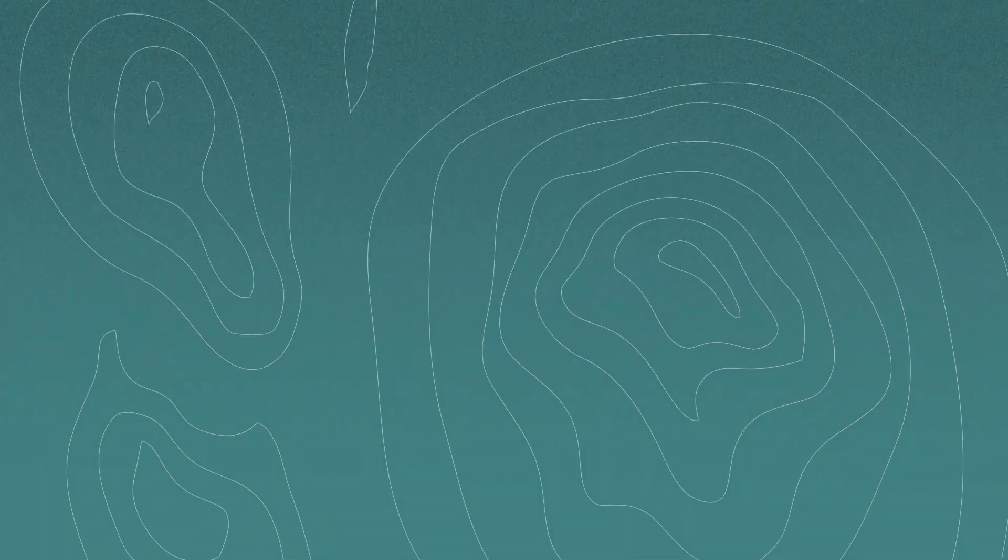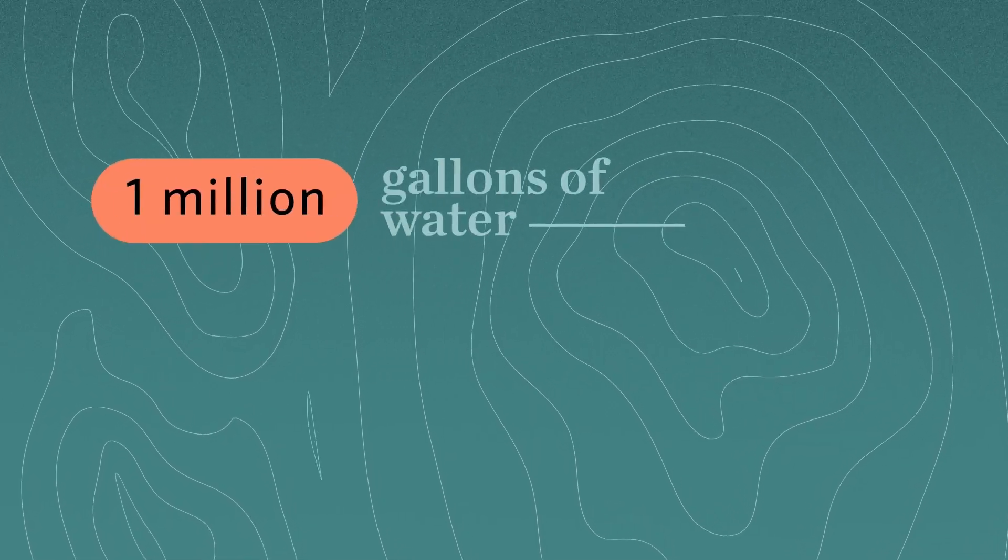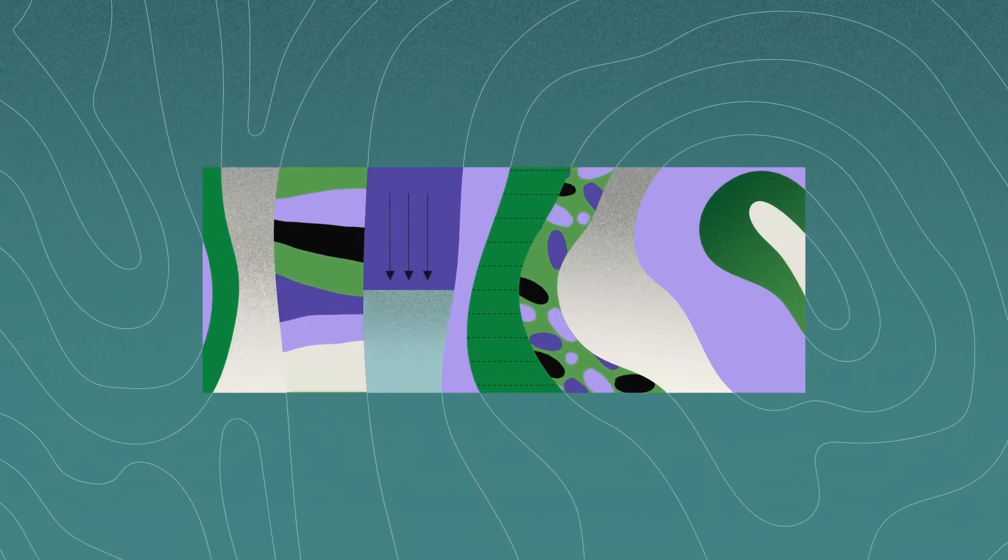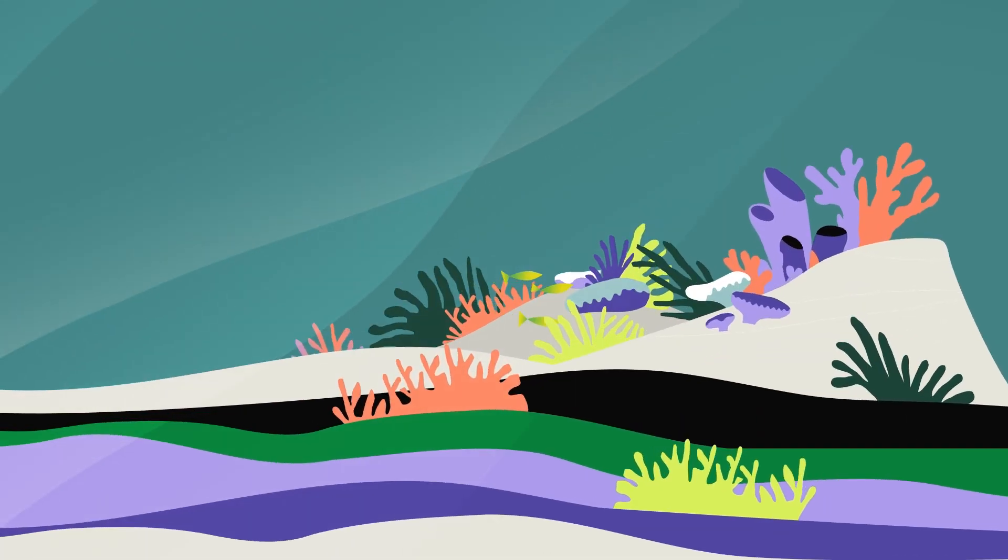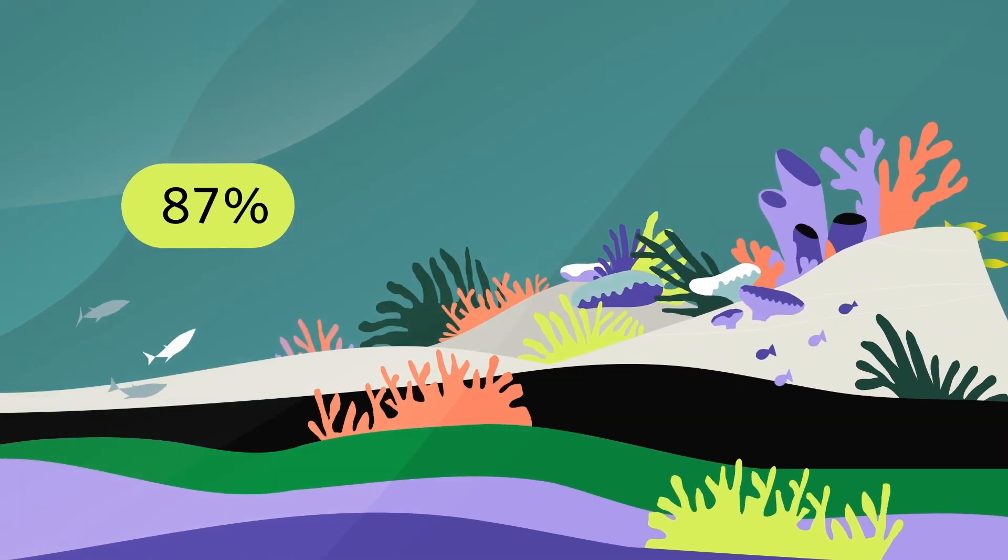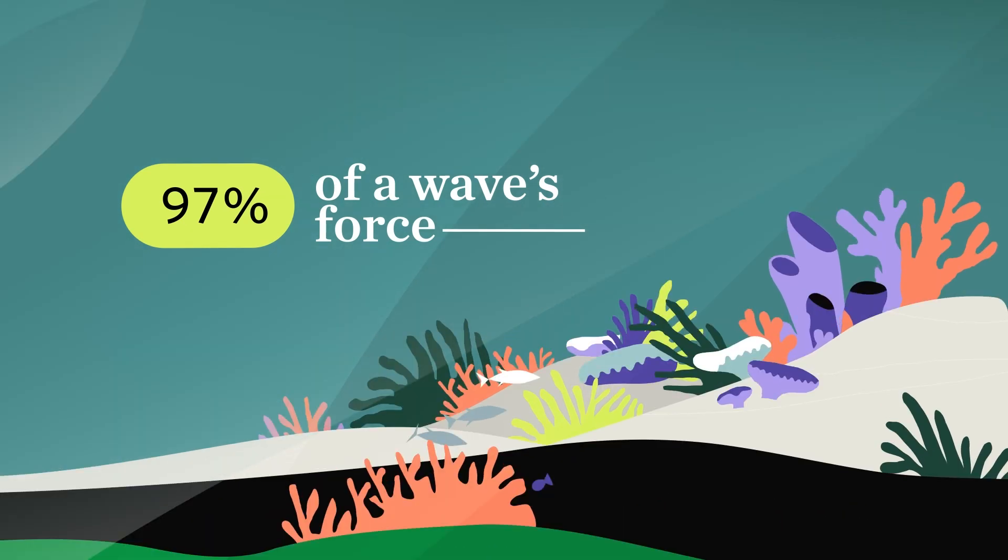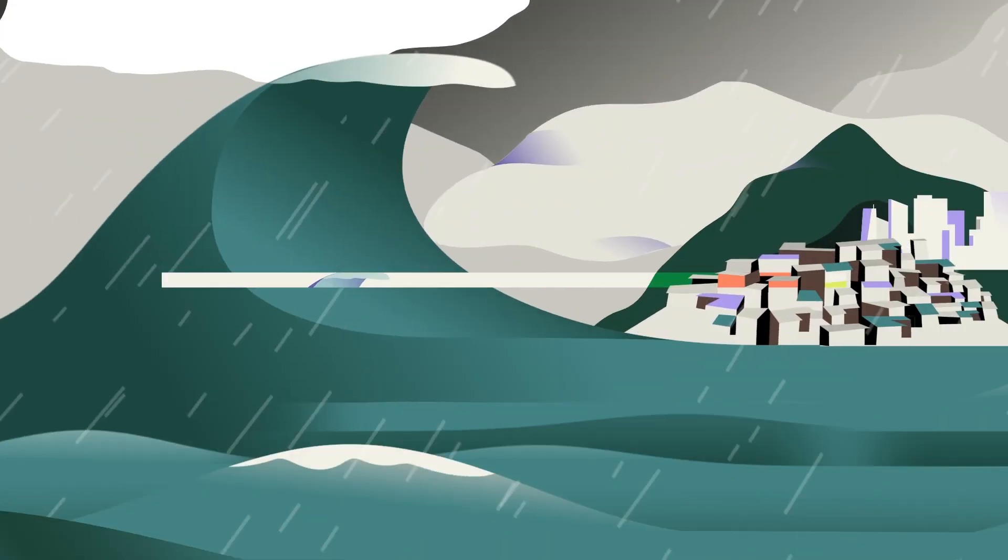Just one acre of wetlands can hold one million gallons of water, acting like a giant sponge to prevent floods. And on coasts, a healthy coral reef can absorb 97% of a wave's force before it hits shore, making us safer when storms hit.